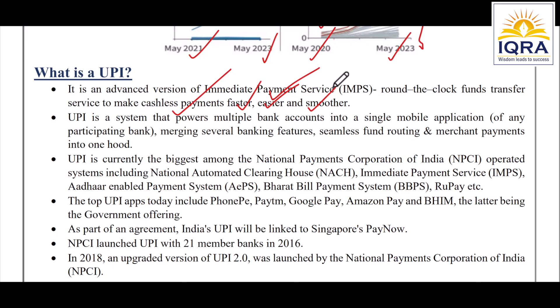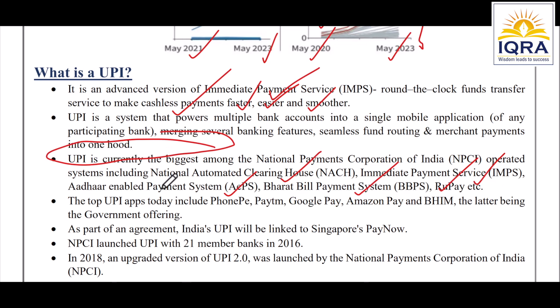UPI is currently the biggest payment gateway among the systems operated by the National Payment Corporation of India — NPCI. In addition to UPI, NPCI also operates: National Automated Clearing House (NACH), Immediate Payment Service (IMPS), Aadhaar Enabled Payment System (AEPS), Bharat Bill Payment System (BBPS), and RuPay. But UPI is the most used among all NPCI-operated systems.